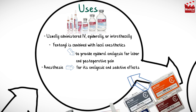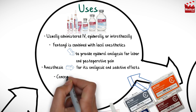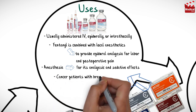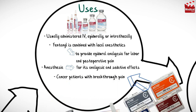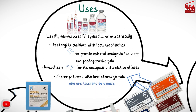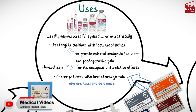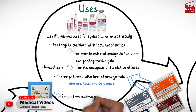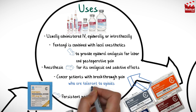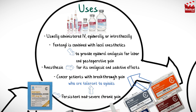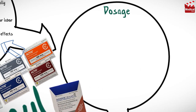The oral transmucosal preparation is used in the treatment of cancer patients with breakthrough pain, only for opioid-tolerant patients. The transdermal patch is used in the treatment of persistent moderate to severe chronic pain, also for opioid-tolerant patients.